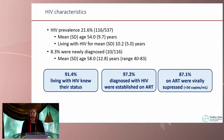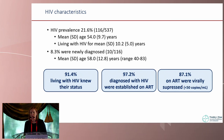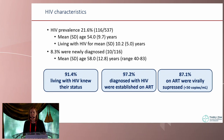Regarding the HIV characteristics of this population: we identified a prevalence of 21.6 percent HIV. Those living with HIV were on average 54 years old and had been living with HIV for an average of 10 years. 8.3 percent were newly diagnosed, averaging 58 years old — the youngest was 40 and the oldest new diagnosis was an 83-year-old woman. In terms of the 95-95-95 targets: 91.4 percent knew their status, 97 percent of those diagnosed were on ART, and 87.1 percent on ART were virally suppressed at less than 50 copies.